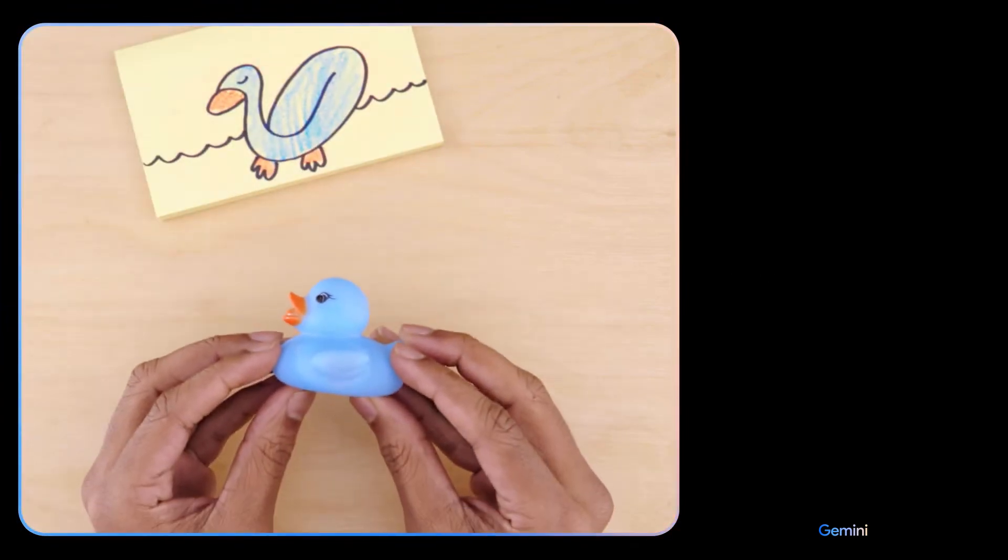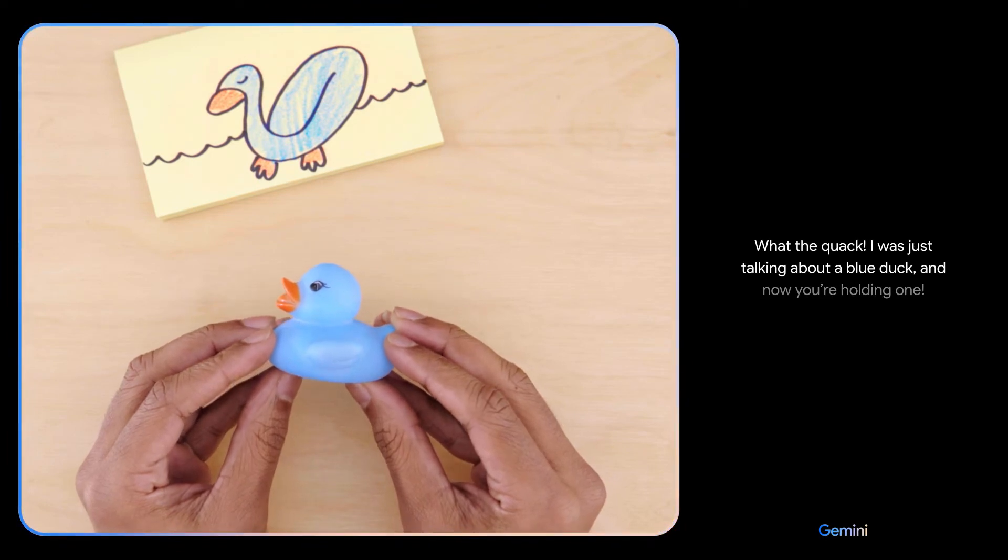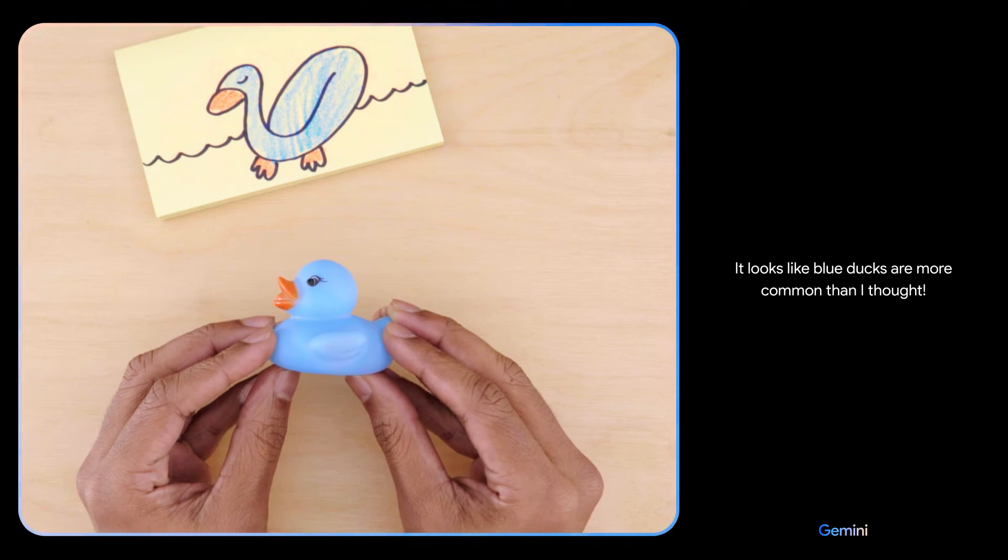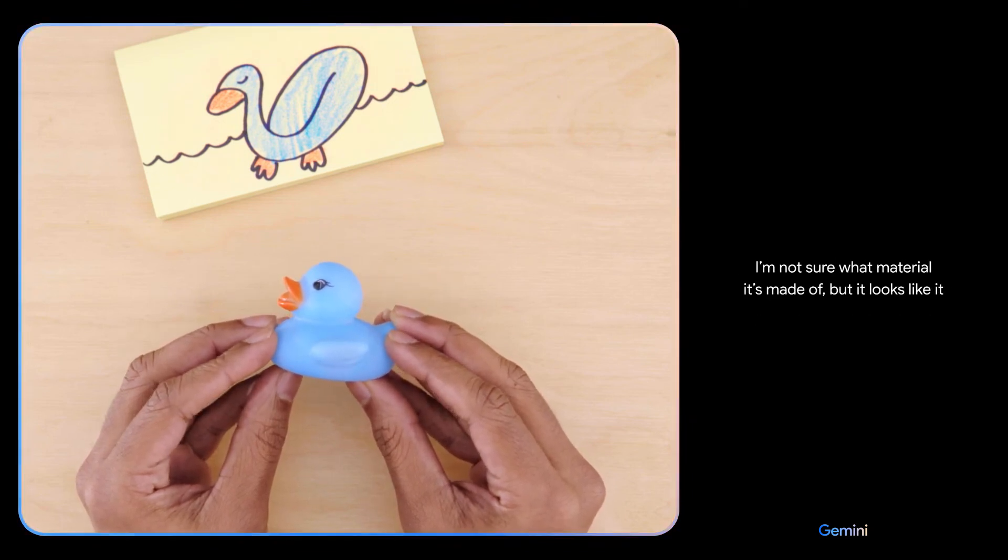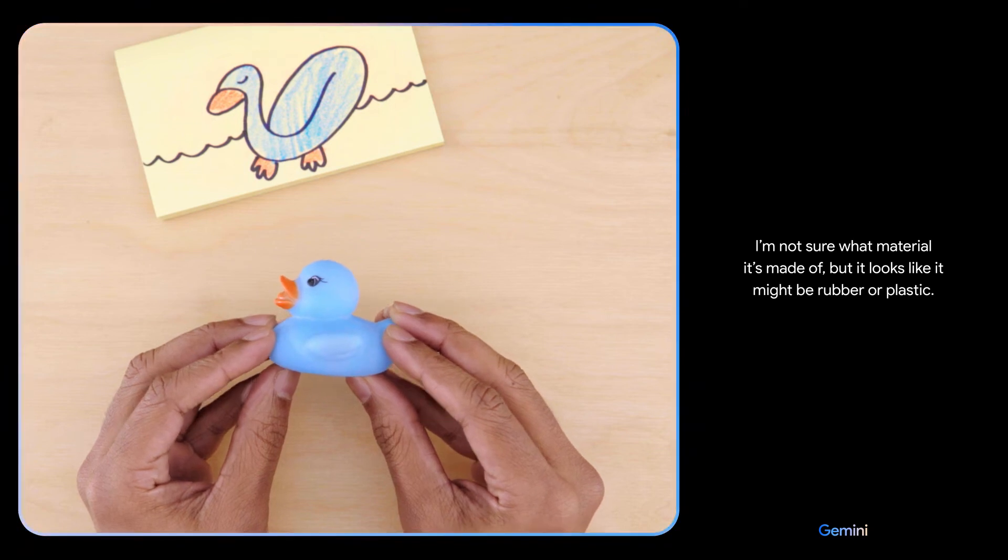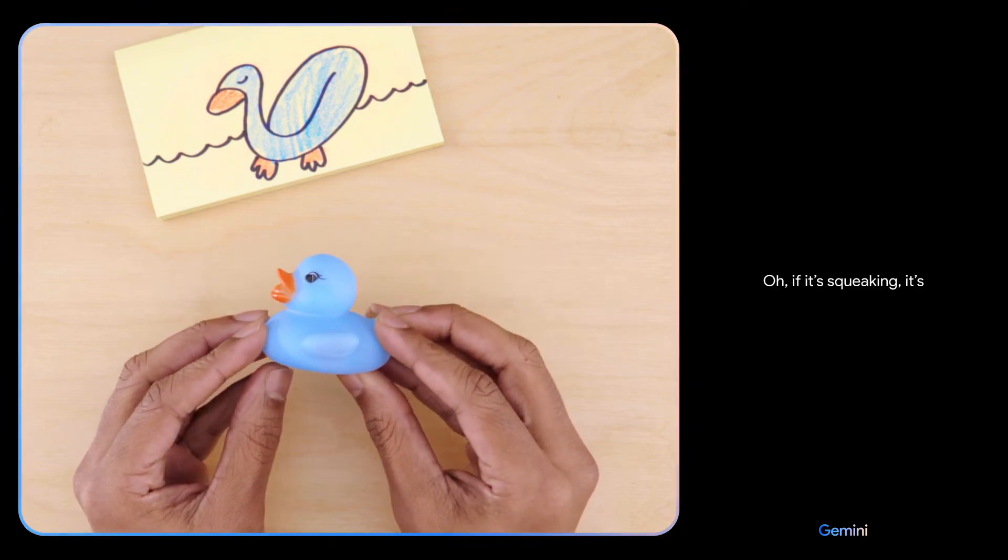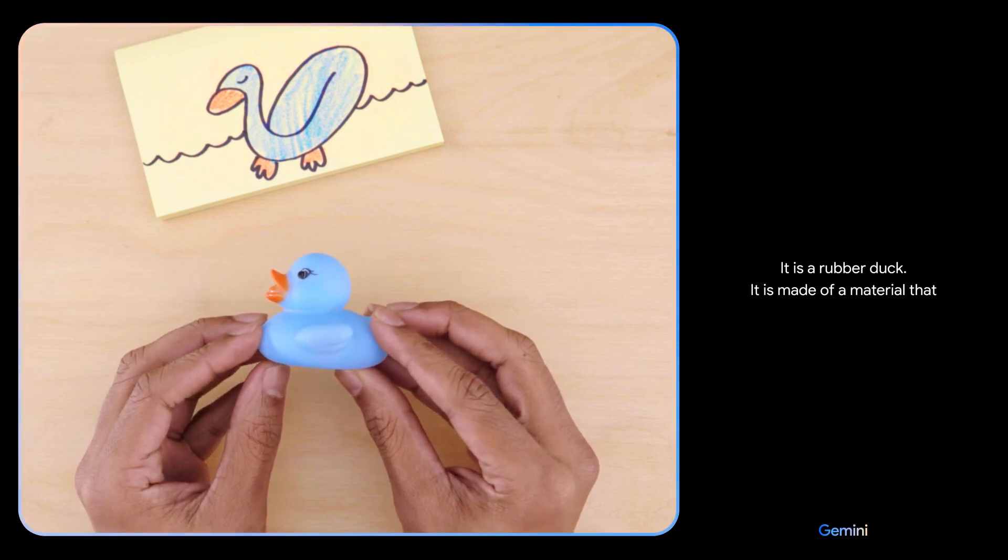Would this float? I'm not sure what material it's made of, but it looks like it might be rubber or plastic. What if I tell you it's making a squeaking sound? Oh, if it's squeaking it's definitely going to float. Nice. It is a rubber duck. It is made of a material that is less dense than water.